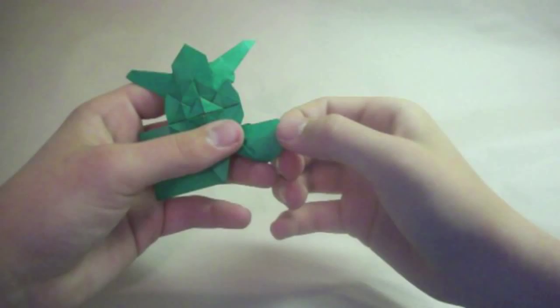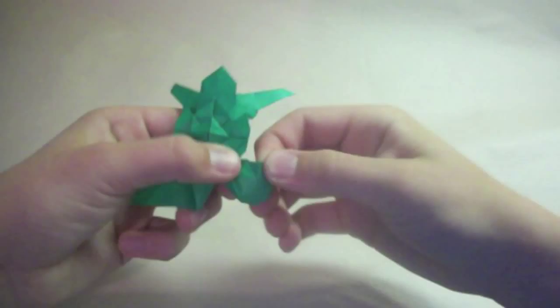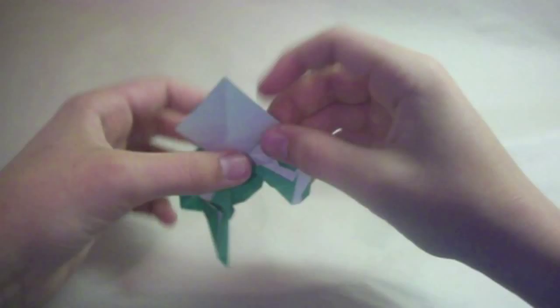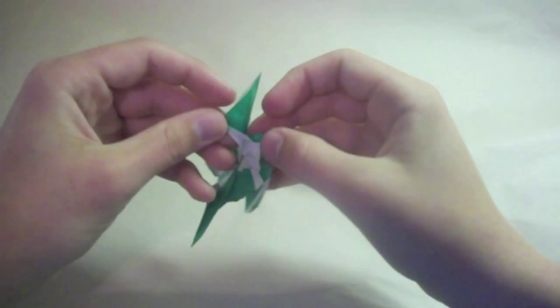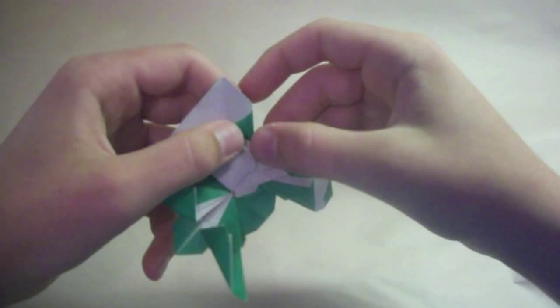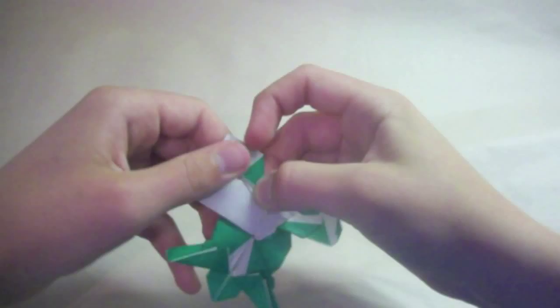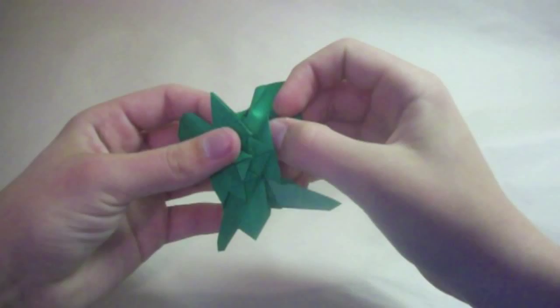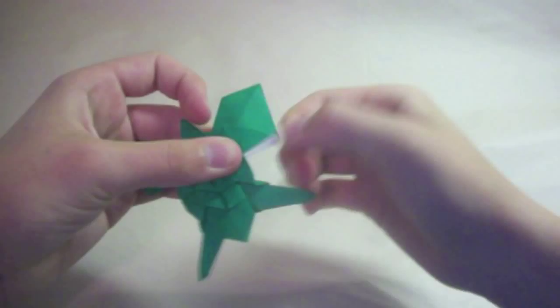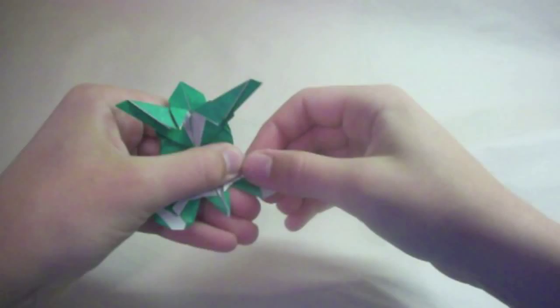And now round off the foot however you want to. And do that on the other side. So first squash fold here. And slide this. Fold the flap in.